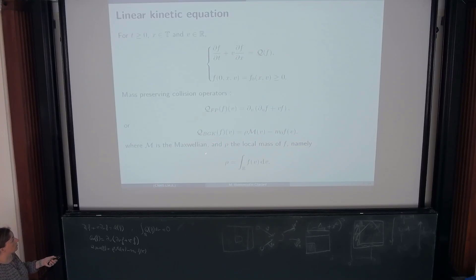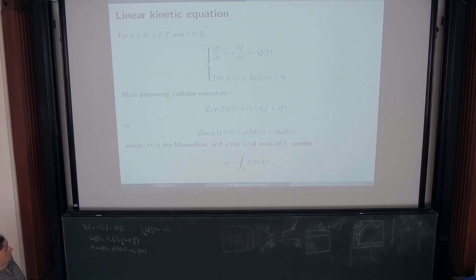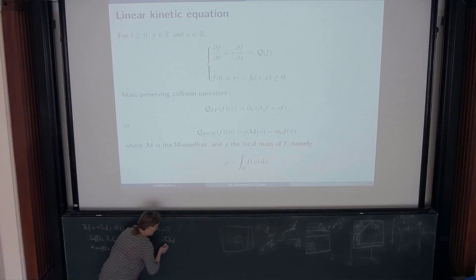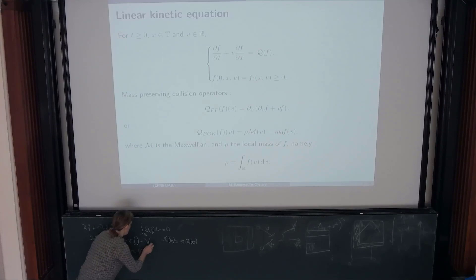The global equilibrium M is the Maxwellian, i.e., the Gaussian. Rho is the density of f, and m0 is the mass of the equilibrium. All our results can be adapted in the BGK case for equilibria which are even functions with first four moments bounded. But here, to have a unified presentation, I will only consider the Maxwellian case. Using the fact that M prime of v equals minus v times M(v), we can rewrite the Fokker-Planck operator as d_v of M times d_v(f/M), and we will use this reformulation later.